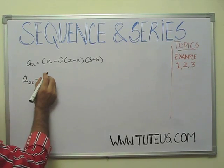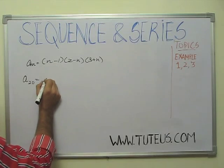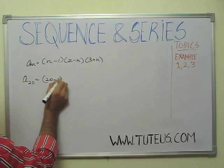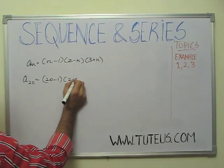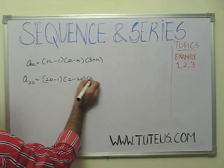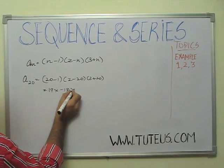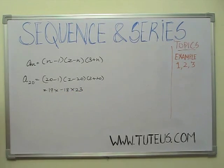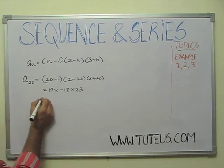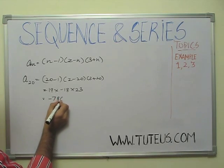20th place. So, it will be 20 minus 1 into 2 minus 20 into 3 plus 20. So, it will be 19 into minus 18 into 23. Then, we will multiply it and then you will get the answer. Minus 7866.